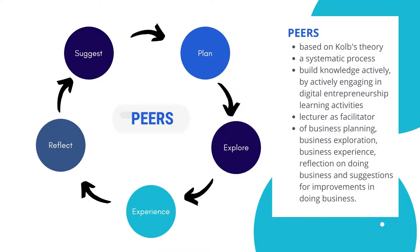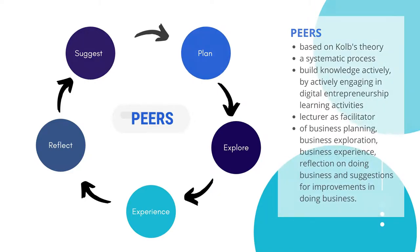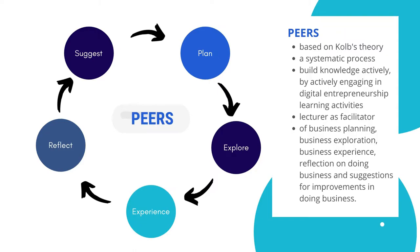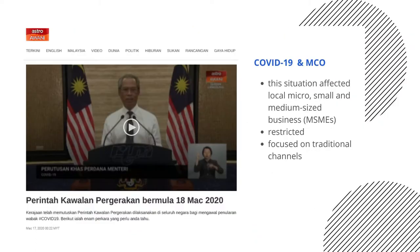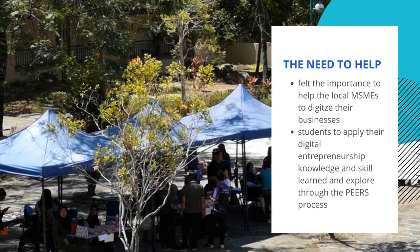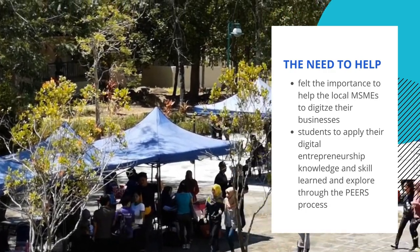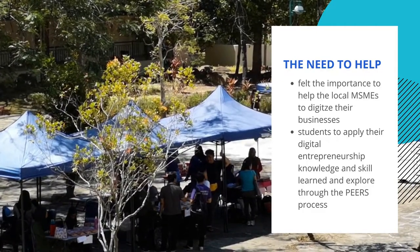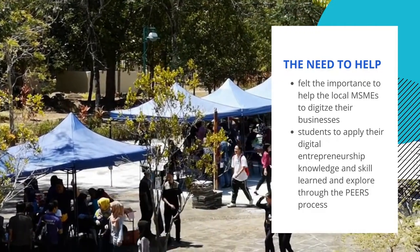After running the digital business, students will need to reflect on their practicum experience and provide suggestions for future improvements. When the COVID-19 pandemic and the Movement Control Order occurred in 2020, this situation affected the local community, especially local micro, small and medium-sized businesses (MSMEs). The APK course felt the importance of helping local MSMEs digitize their businesses and for students to apply their digital entrepreneurship knowledge and skills through the PEERS process.